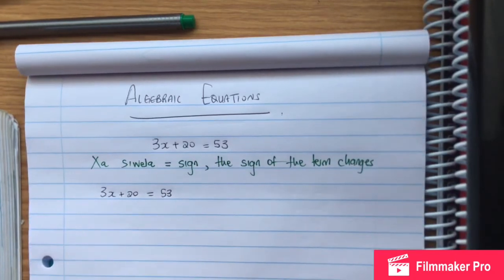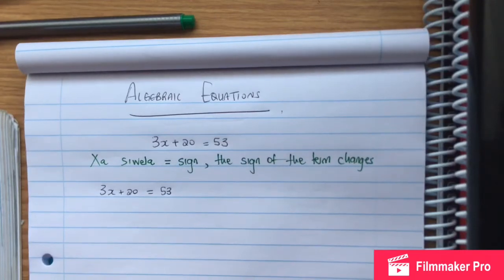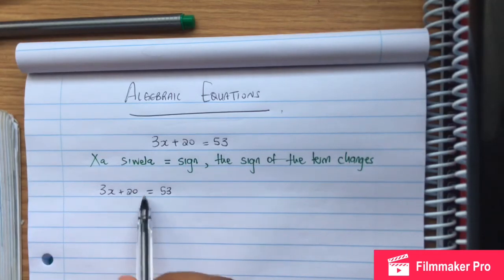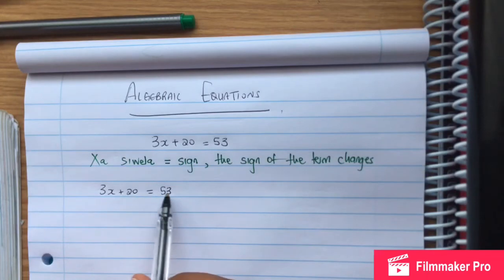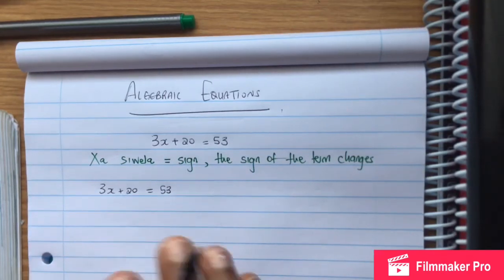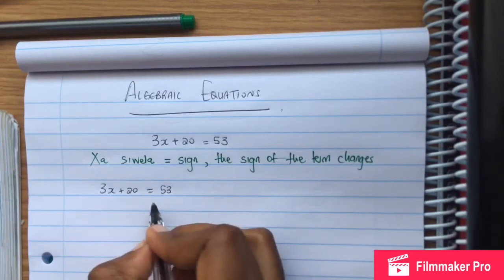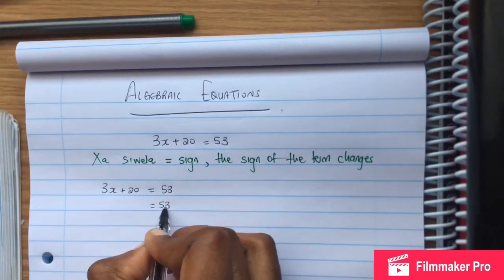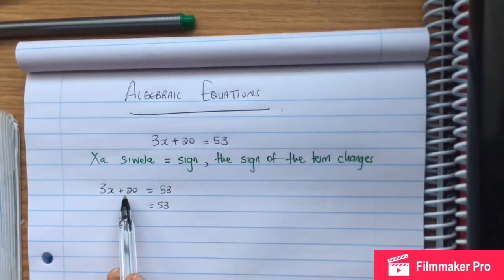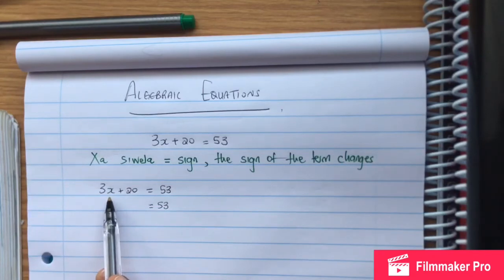So we have 3x plus 20 is equal to 53. Now we need to group like terms together. The constant and the variable need to be separated. So we need the constant to move to the other side.